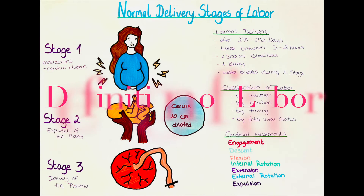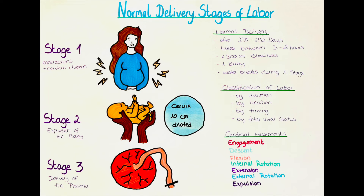How do we define labor? Labor is the process by which a fetus and a placenta leave the uterus. This can be either by a vaginal delivery or by a cesarean section. Labor is also defined as the continuous progressive contractions that help to open the cervix by dilation and effacement, and a passage of the fetus and placenta through the birth canal.